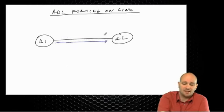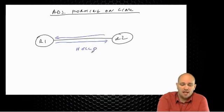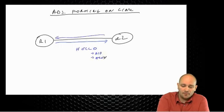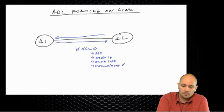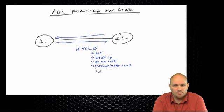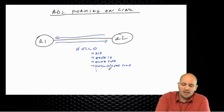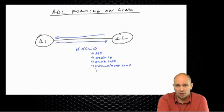The routers start by sending hellos — hello packets are first exchanged. Hello packets contain information like router ID, the area ID, the area type, hello timers, and a couple more parameters, but these are really the important ones. Once the hellos are exchanged and once the routers know about each other, they are going to proceed to form the adjacency.